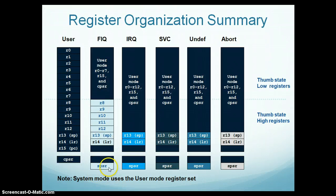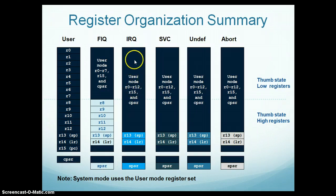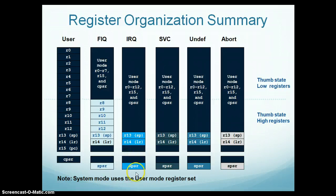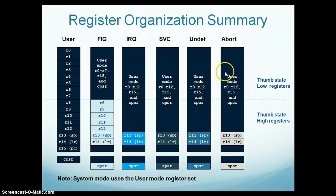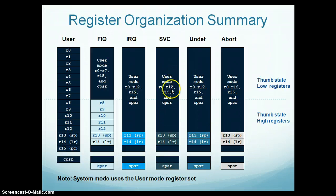Similarly, in Interrupt Request mode, the User registers used are R0 to R12, R15, and CPSR. IRQ has Banked Registers R13, R14, and SPSR — a fresh set that it does not use from the User Mode. The remaining modes — SVC, Undefined, and Abort — have similar register organization to IRQ, where all three modes have R13, R14, and SPSR as Banked Registers (fresh copies), and the remaining registers R0 to R12, R15, and CPSR are used from the User Mode itself.